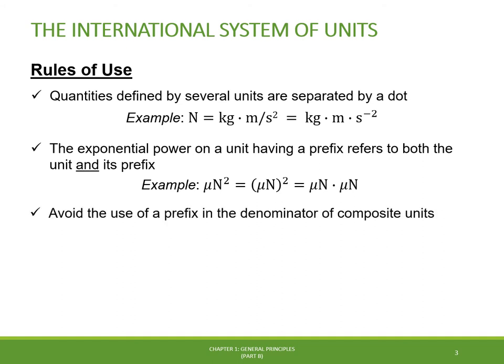The third rule states that we should avoid the use of a prefix in the denominator of composite units. The only exception is for kilograms, which is a basic unit itself. For example, we shouldn't write newtons per millimeter, but rather kilonewtons per meter. This notation is much easier to understand.